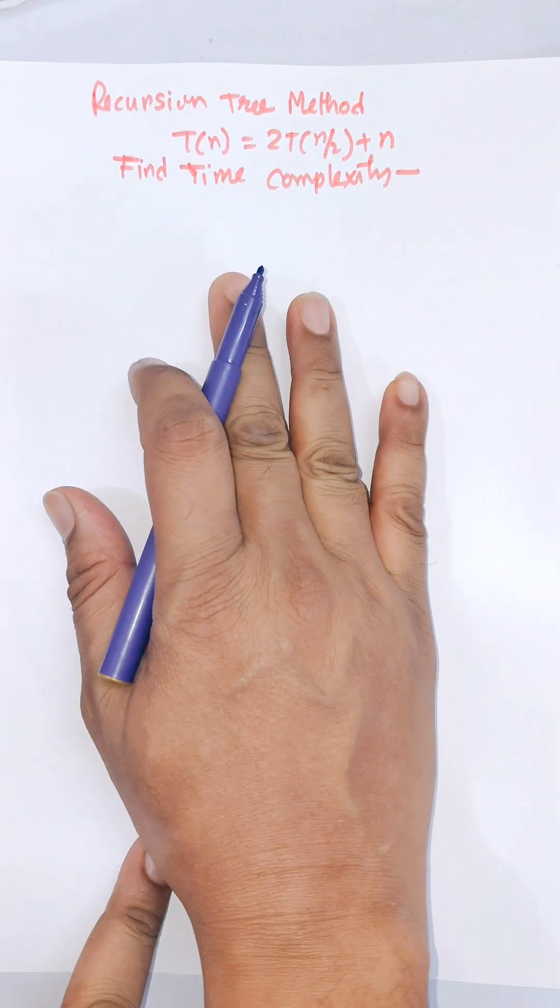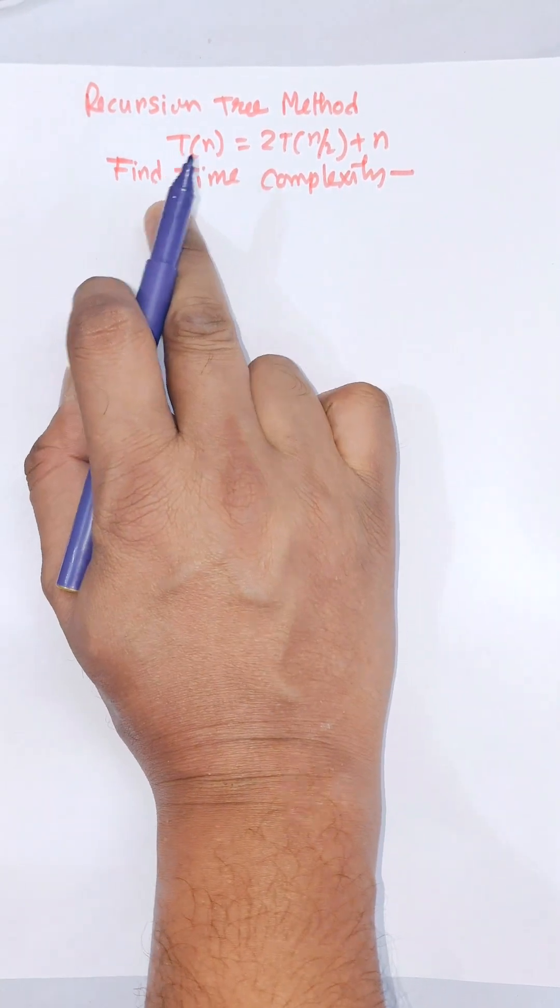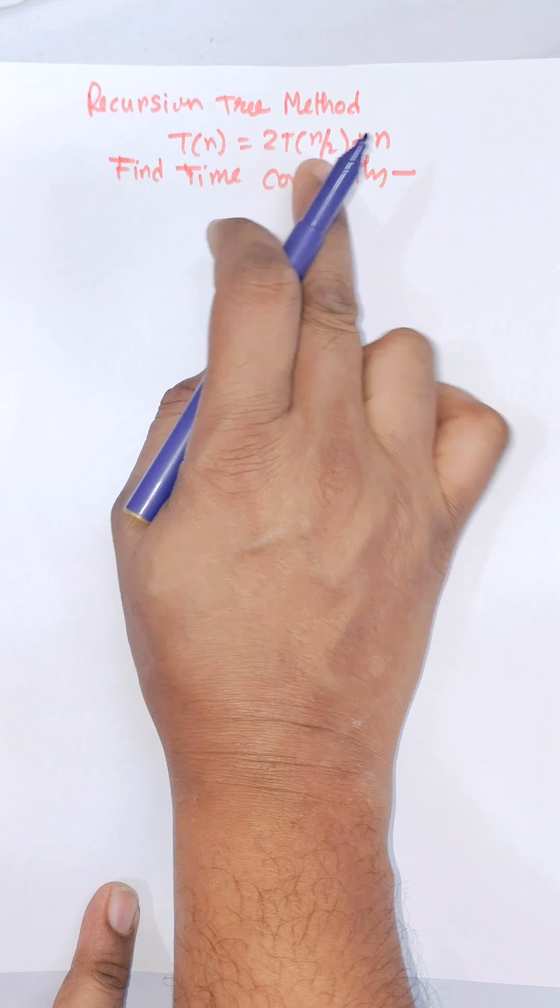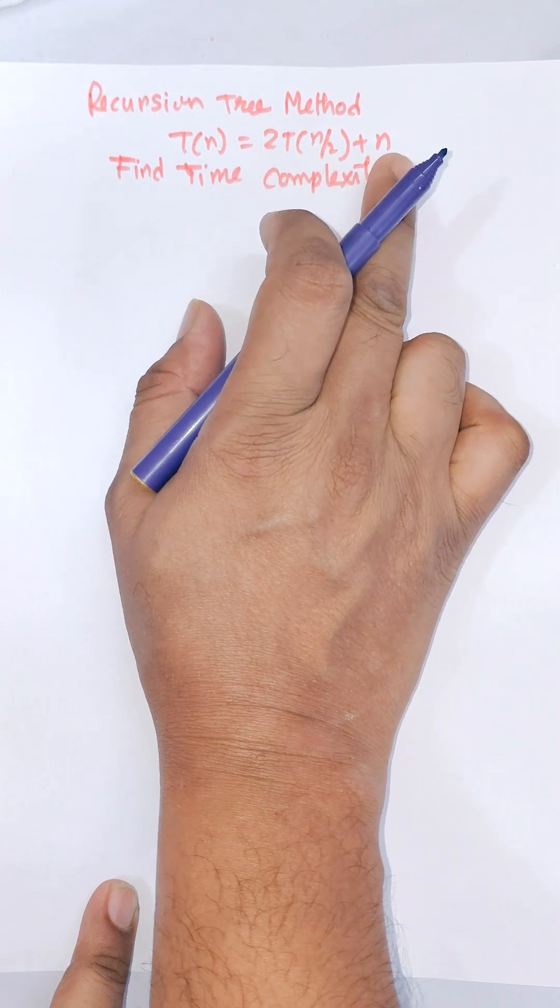Hi everybody, in this video I am going to discuss the recursion tree method to find time complexity. Here T(n) equals 2T(n/2) plus n.